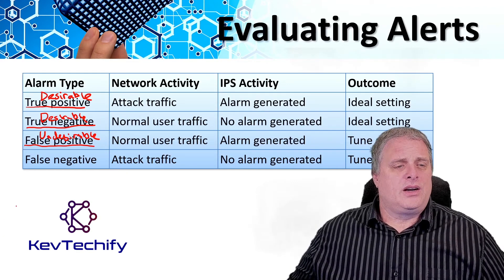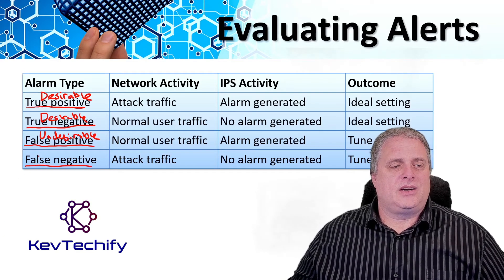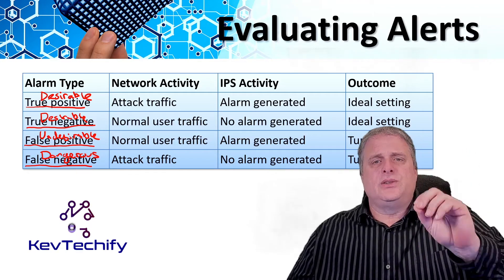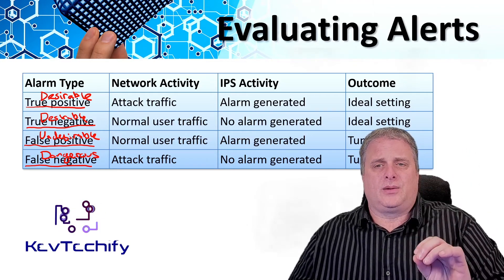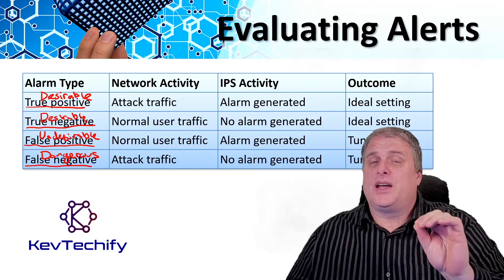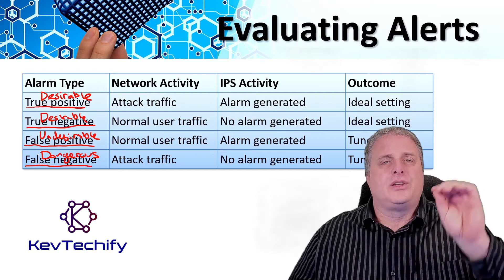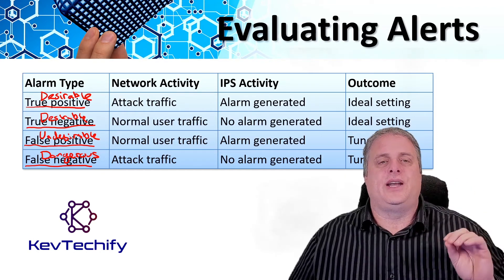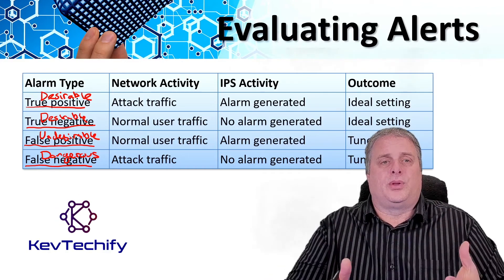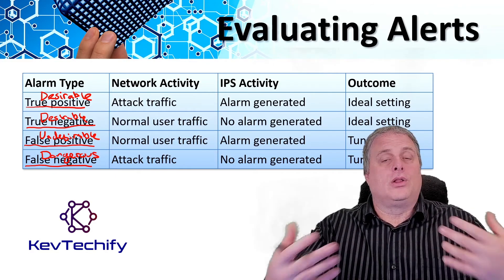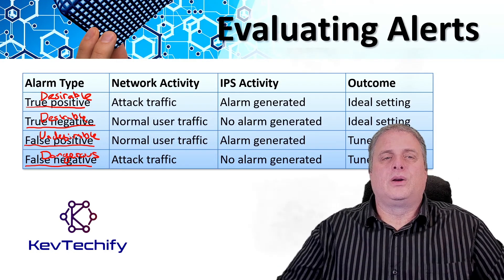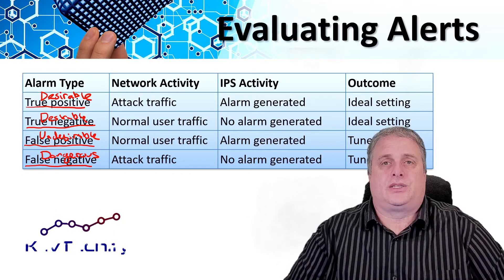The last classification is a false negative, which is dangerous. This is used when an IPS fails to generate an alarm and known attacks are not being detected. This means that exploits are not being detected by your security systems. These incidents could go undetected for a long time and ongoing data loss and damage could result. The goal is for these alarms to generate true positive alarms.